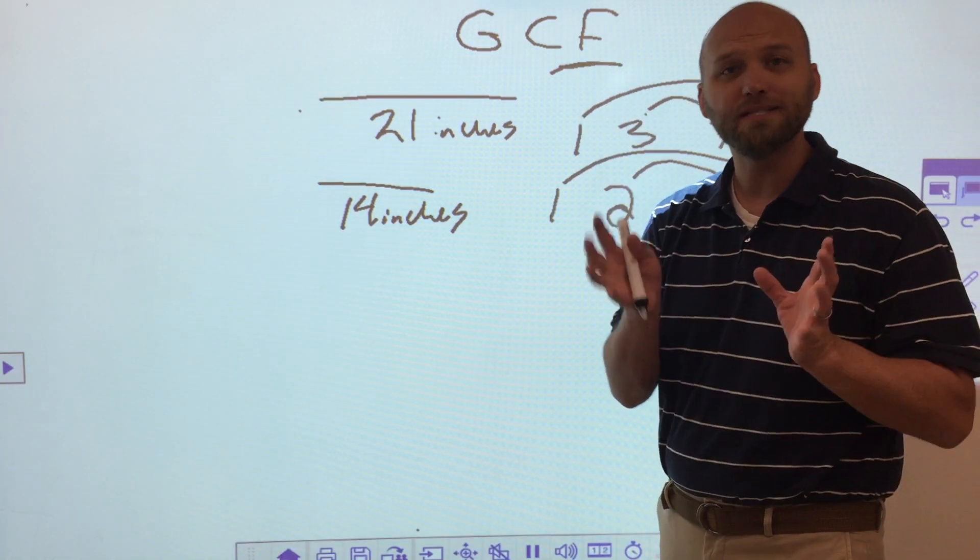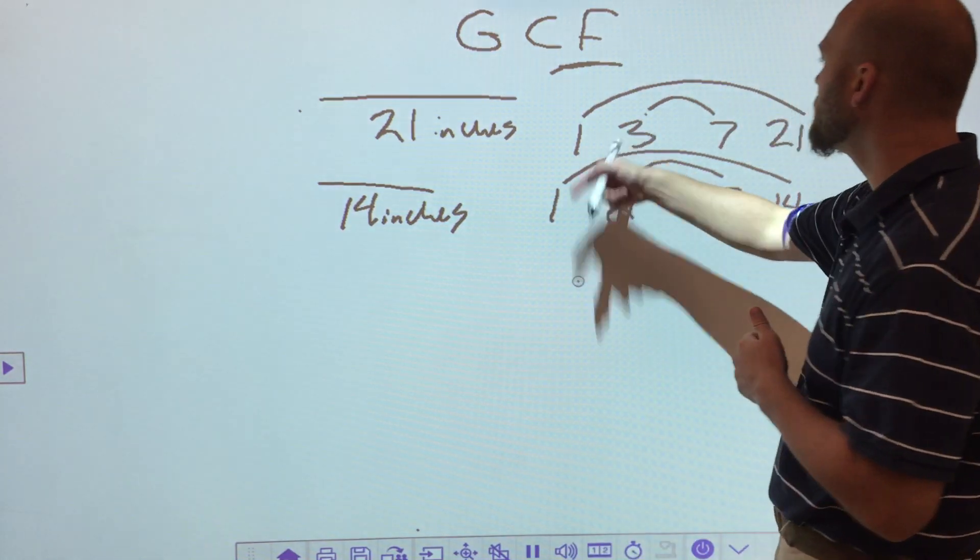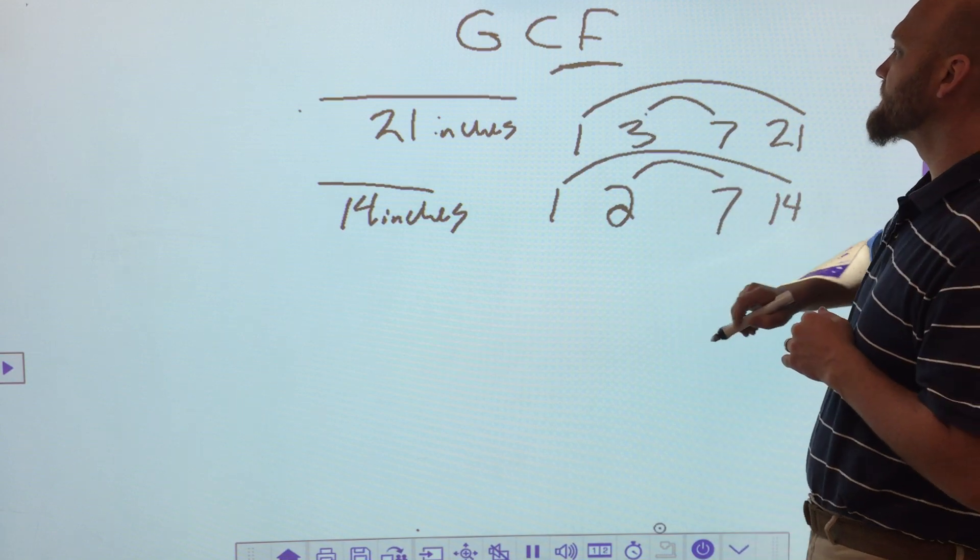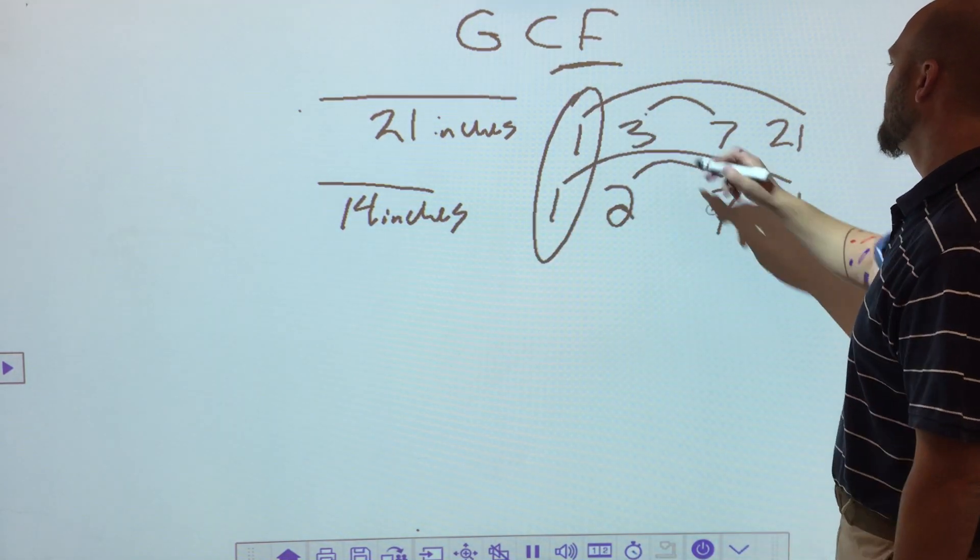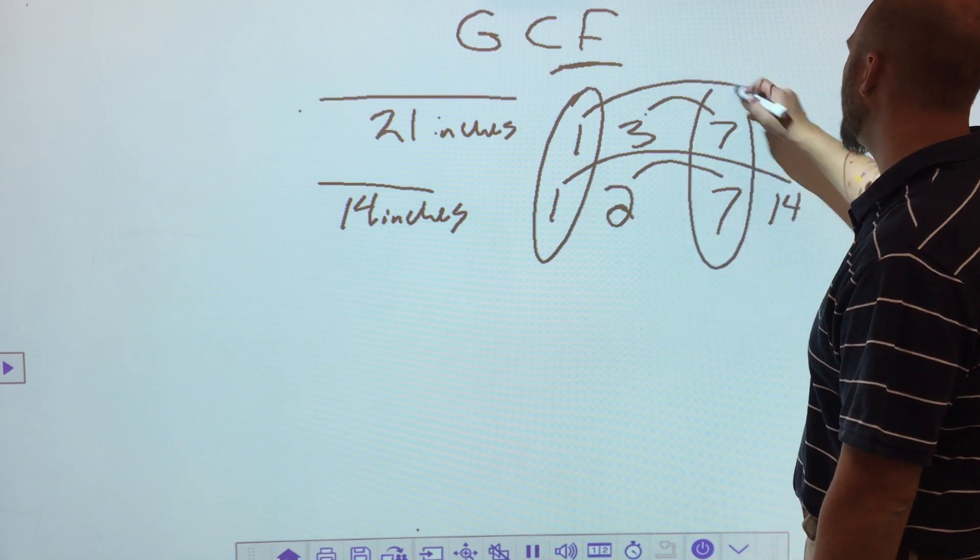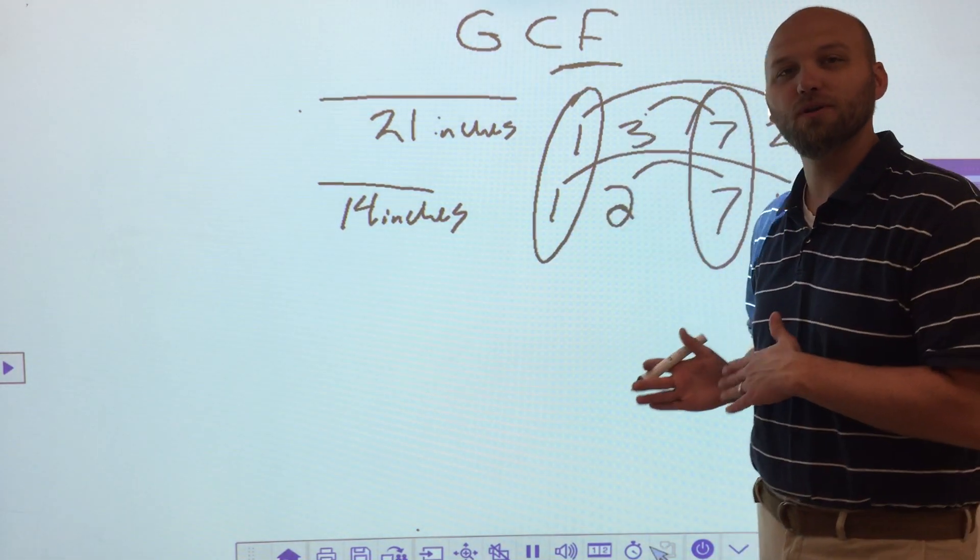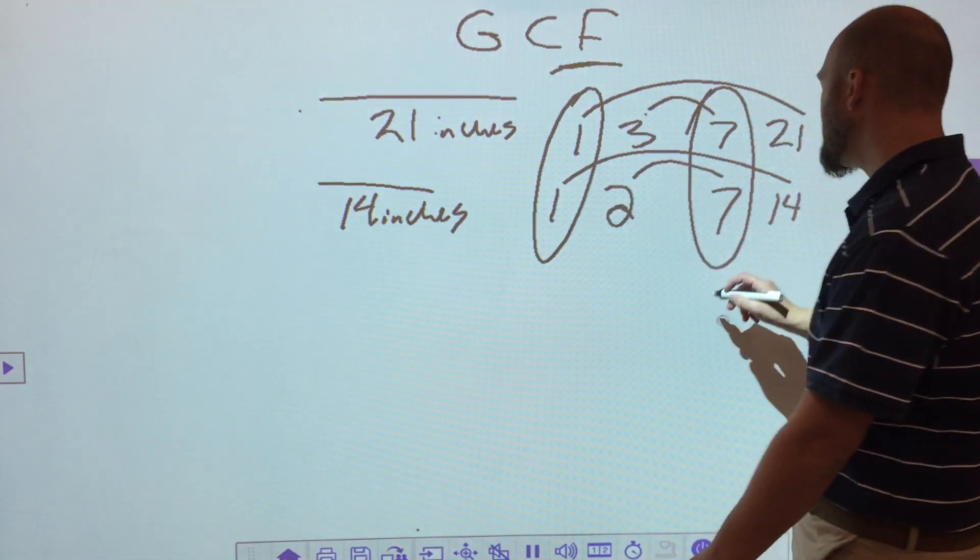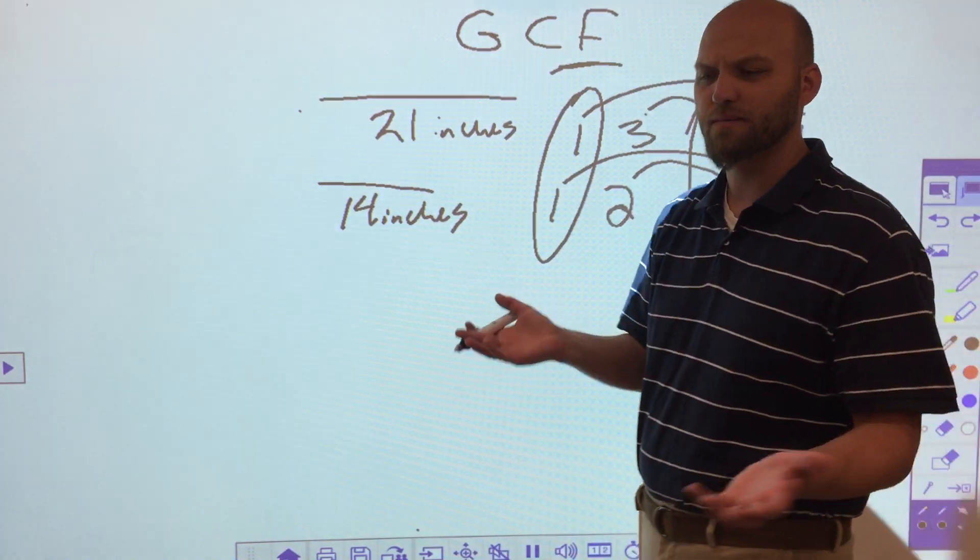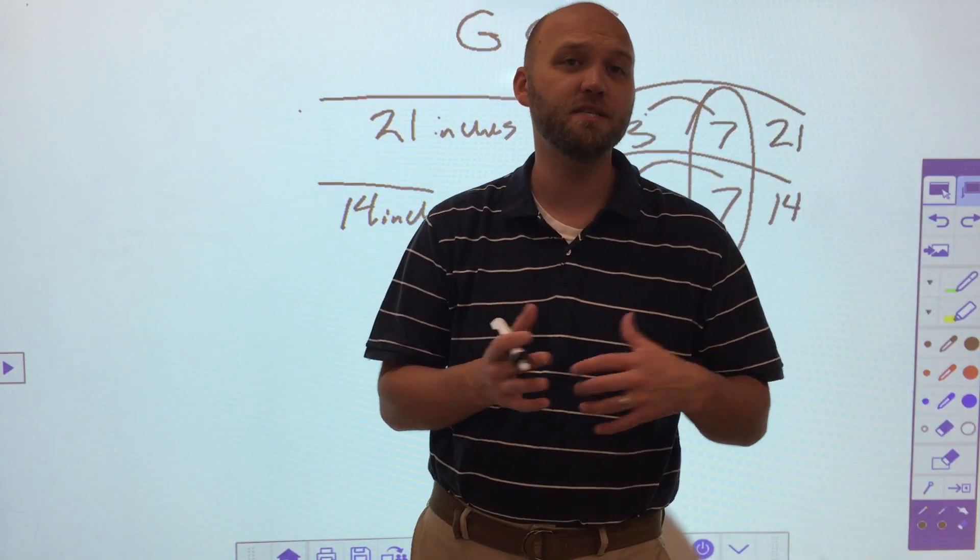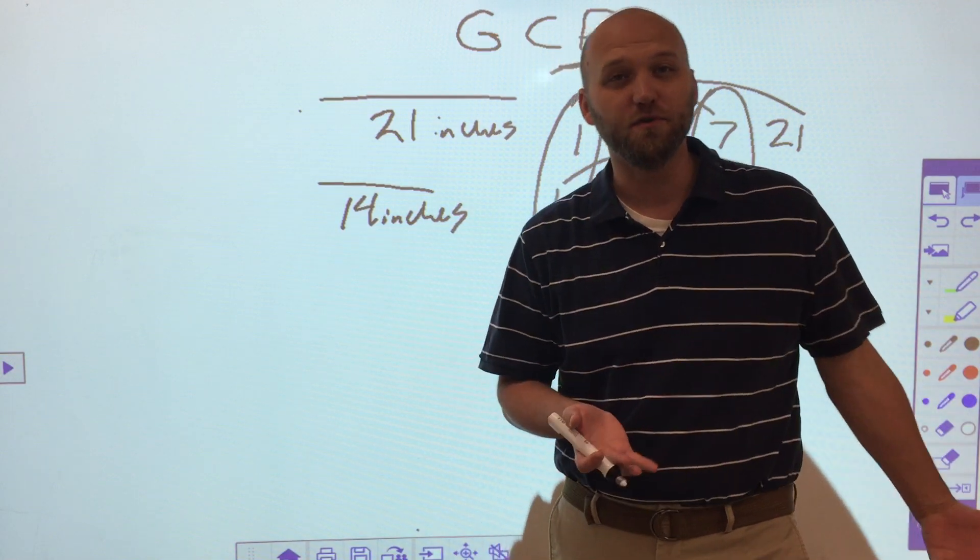So, the greatest common factor. Well, common factors. Yes, common factor is 1. 2 and 3 are not a common factor. 7 is a common factor. 21 and 14 are not. So which is the largest number that they have in common? 7. So the GCF of 21 and 14 is 7. So I can take both of those strips and I can cut them up into 7 inch pieces and they would be all equal size with no waste left over.